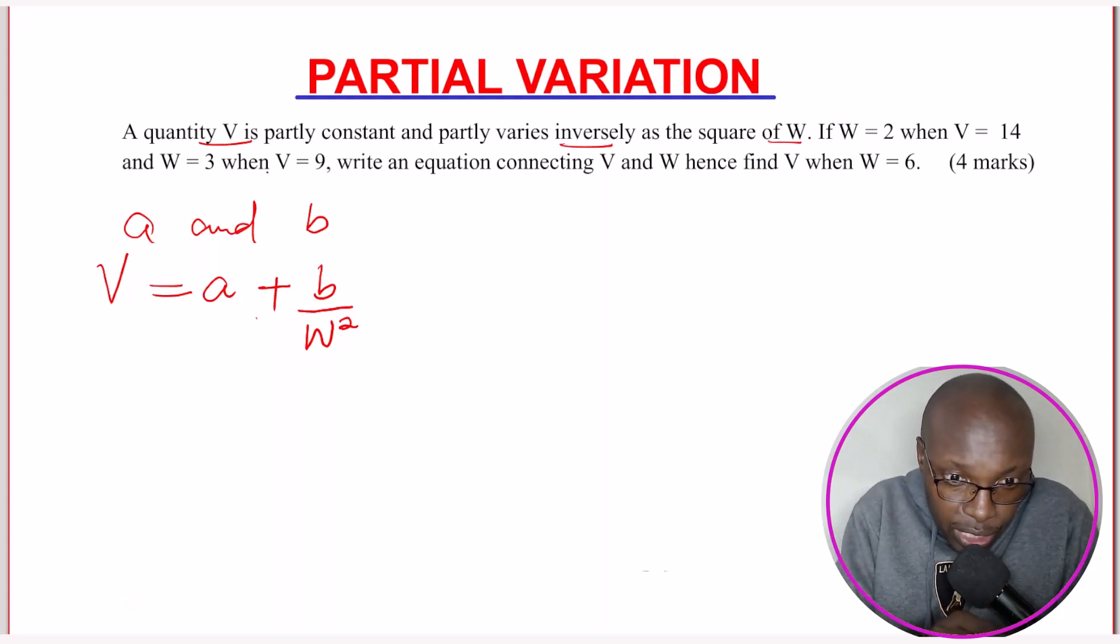A quantity V is partly constant. That is equals to A is the constant and connect this one with an addition sign. Varies inversely as the square of W. So B is another constant. Then inversely as the square of W divided by W squared.